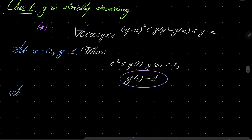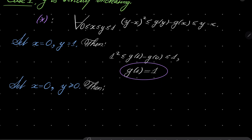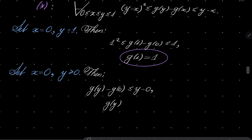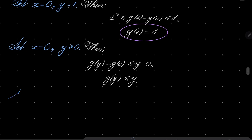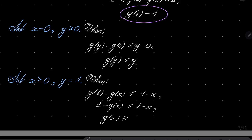Now let's set x to be 0 and y to be any number between 0 and 1. Using only the second inequality: g(y) minus g(0) is less than or equal y minus 0. In other words, g(y) is less than or equal y. Finally, set x to be any number between 0 and 1 and let y equal 1. Then g(1) minus g(x) is less than or equal 1 minus x. But g(1) is 1, so 1 minus g(x) is less than or equal 1 minus x, which means g(x) is greater than or equal x.